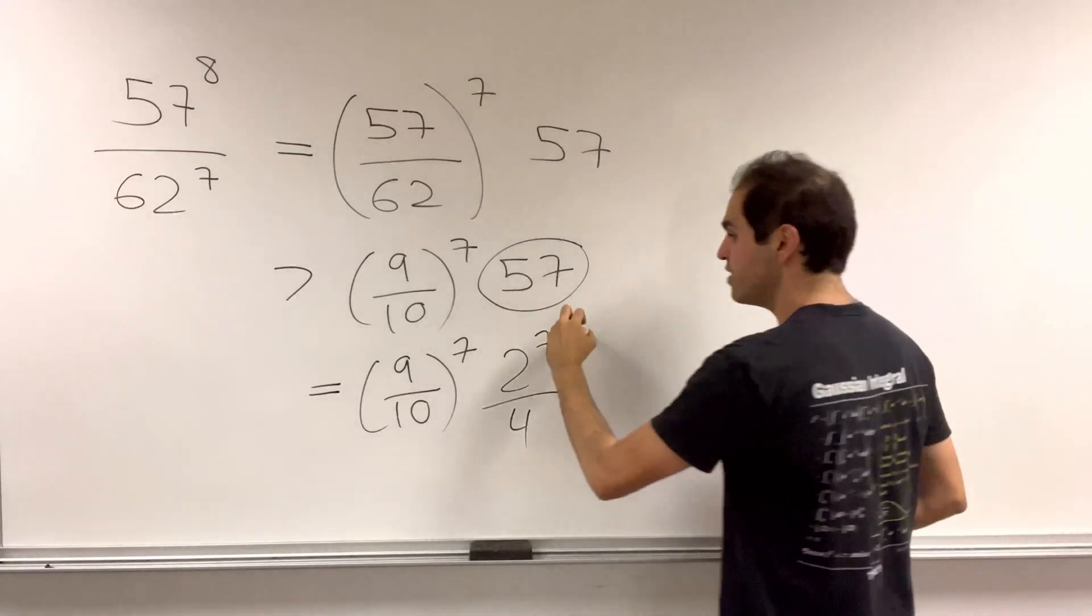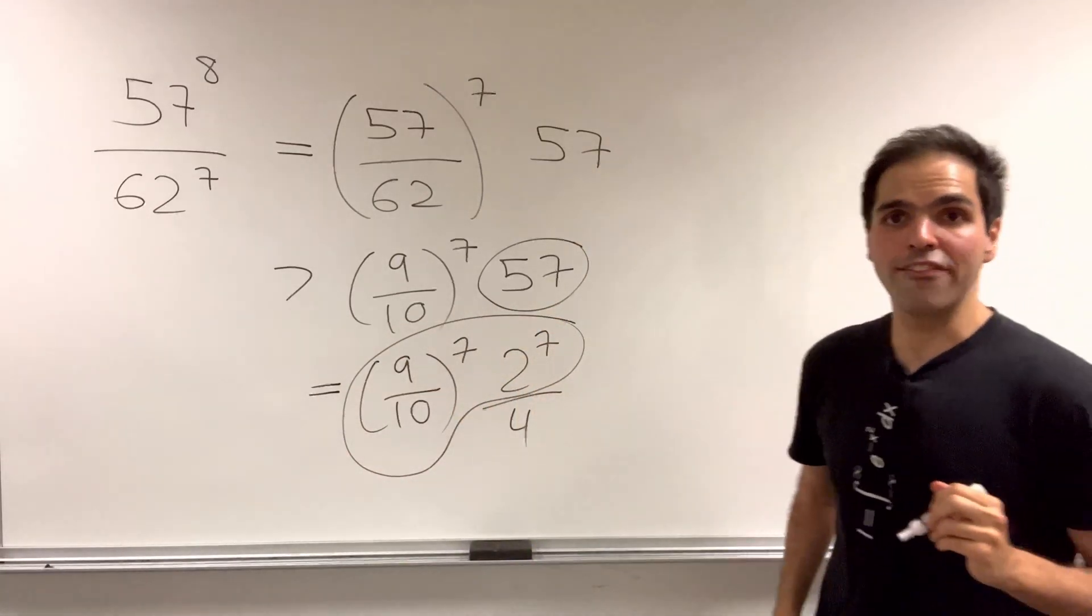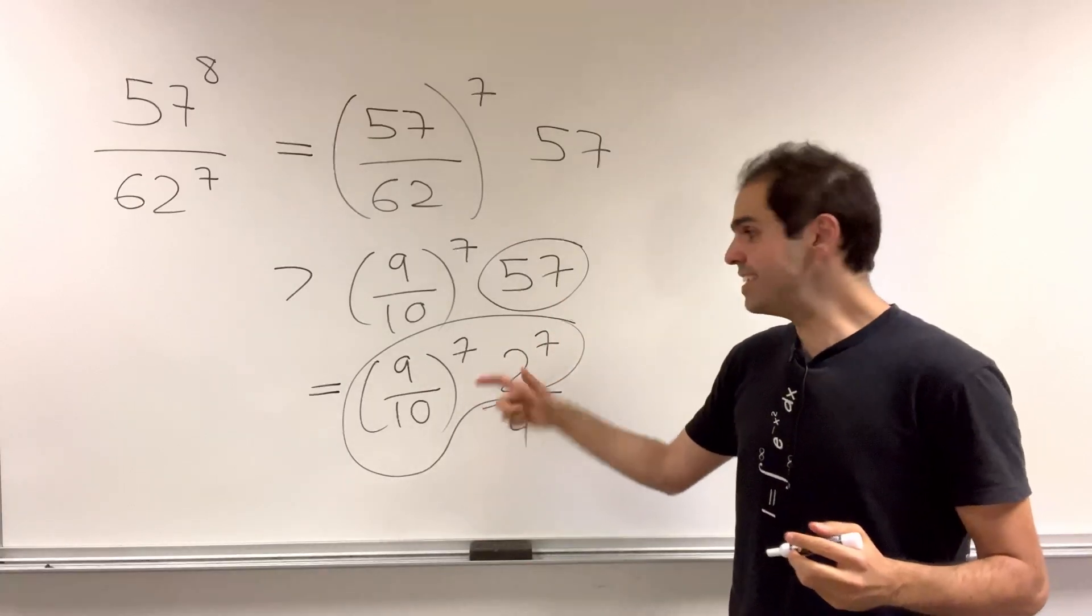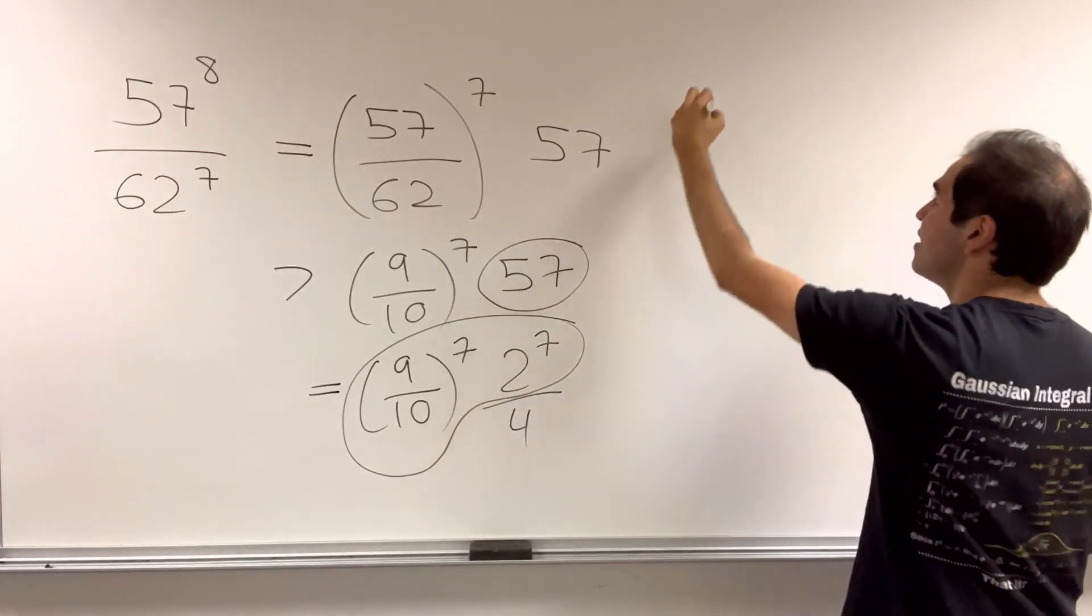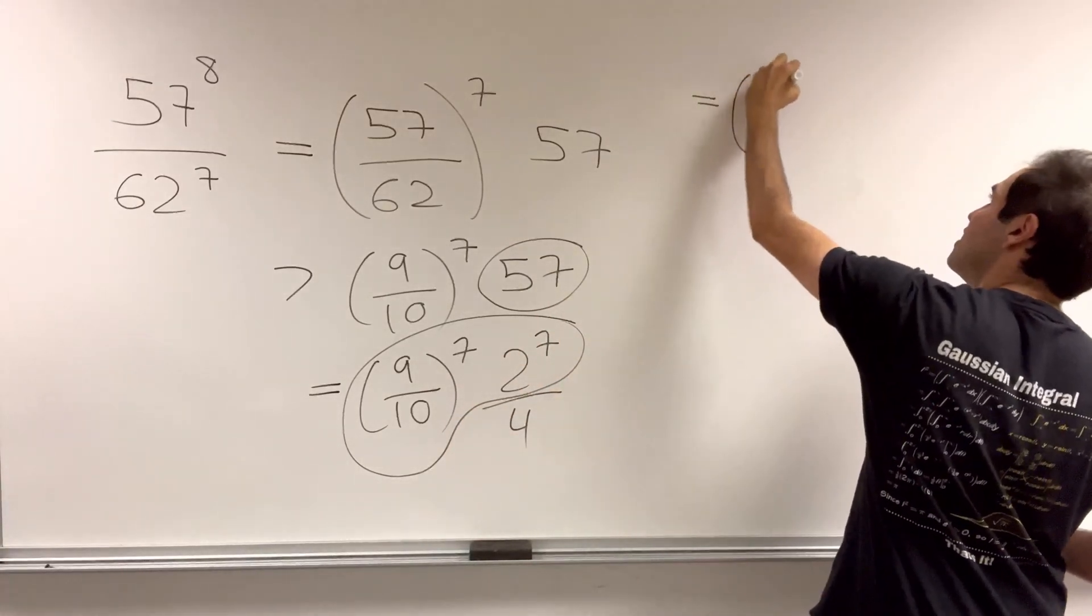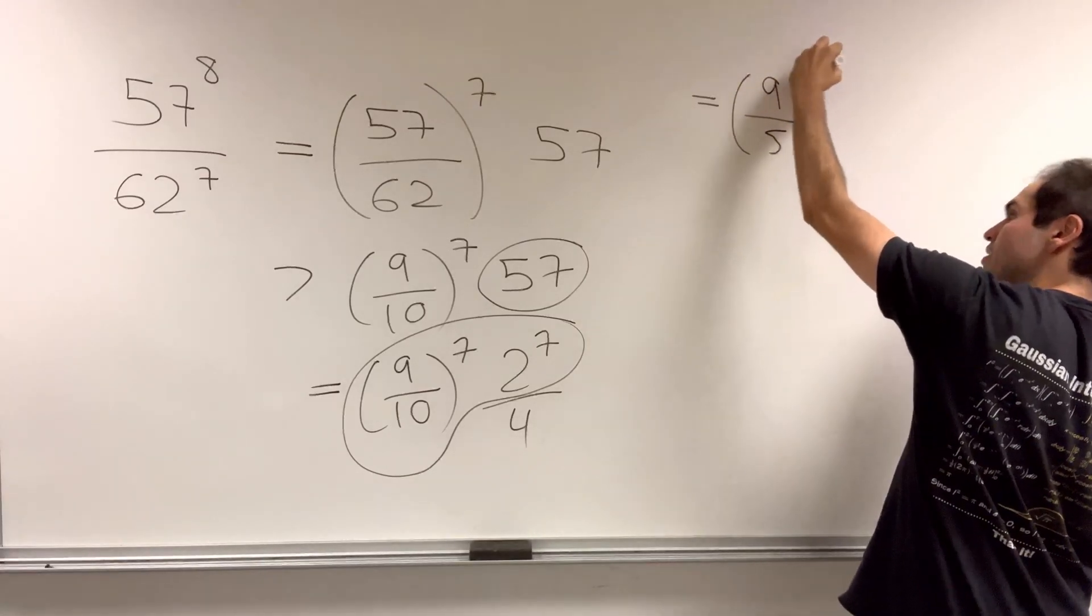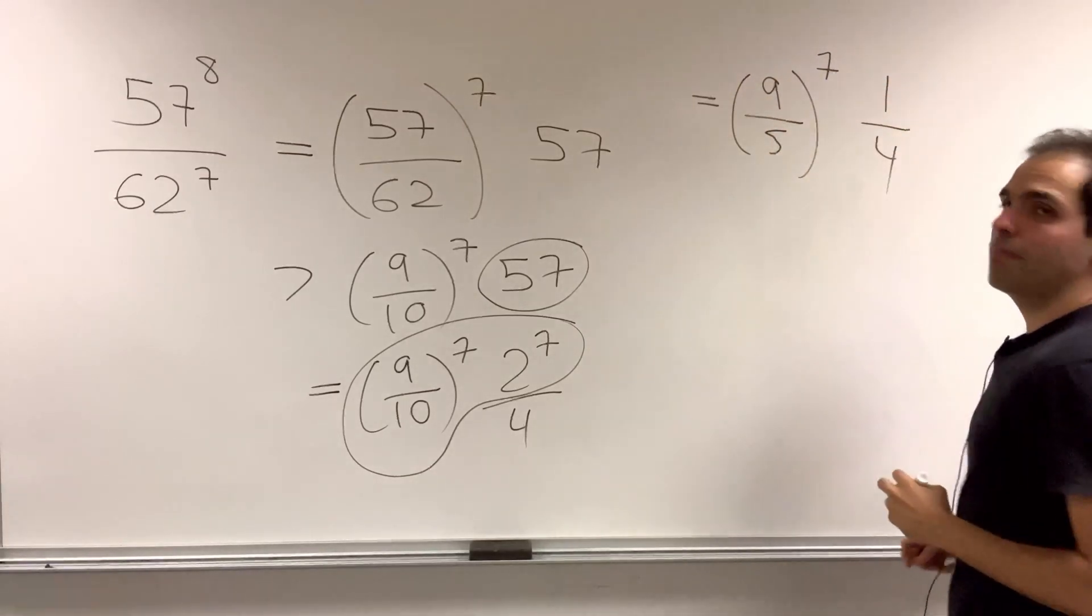And now, this whole shebang, we can write this as a 7th power, as 18 over 10 to the 7th, which is the same thing as 9 fifth to the 7th divided by 4.